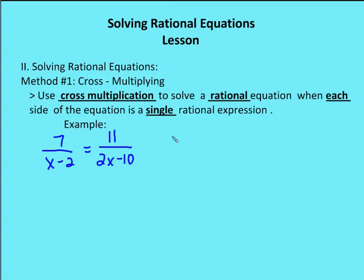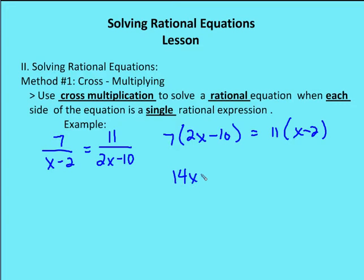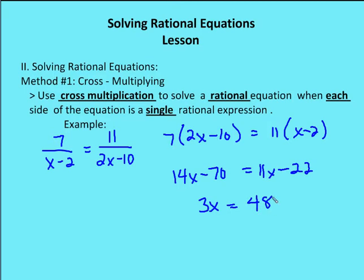Let's use cross multiplication on this equation, since I have single rational expressions on each side. Cross multiplying gives me 7 times (2x minus 10) equals 11 times (x minus 2). Distributing: 14x minus 70 equals 11x minus 22. Simplifying — 14x minus 11x gives me 3x — then adding 70 to both sides gives me positive 48. So x is equal to 16.